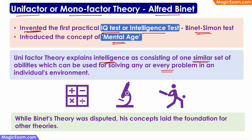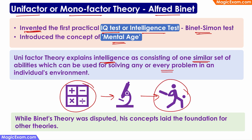But there is one problem with this theory. Even a common observation shows that a person who is good in mathematics need not necessarily be good in biology, and he may not be good in sports. Similarly, a person who is very good in sports need not be good in biology or mathematics.